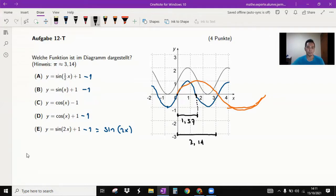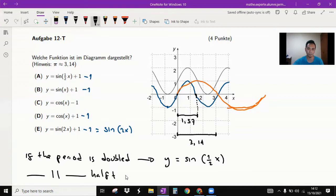The rules say that if the period is doubled, then the function is gonna be the sine function y equals sine half x. And if the period is half time tighter, so half time tighter, here the sine function is gonna be doubled here in the bracket. So it's reversed, okay?